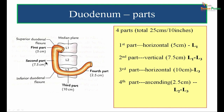Coming to the parts of duodenum, measuring 25 centimeters in length, the duodenum is made up of 4 parts. The first part is horizontal, measuring 5 centimeters, and lies at the level of the first lumbar vertebra. It turns down, making a bend known as the superior duodenal flexure, and runs down to the level of L3 vertebra. This vertical second part measures around 7.5 centimeters in length.